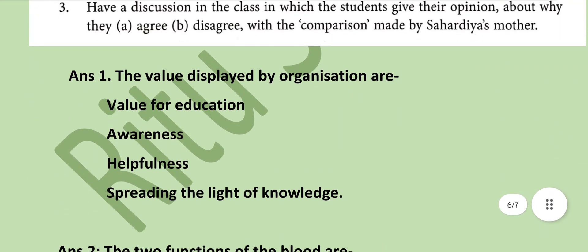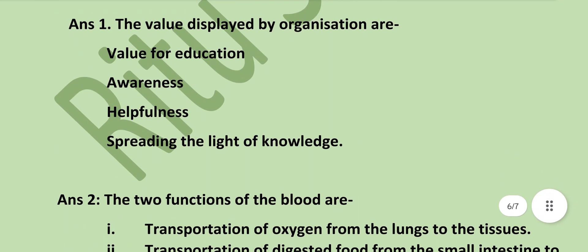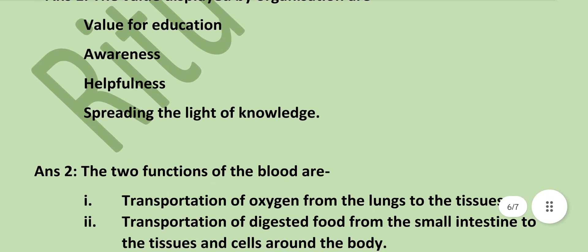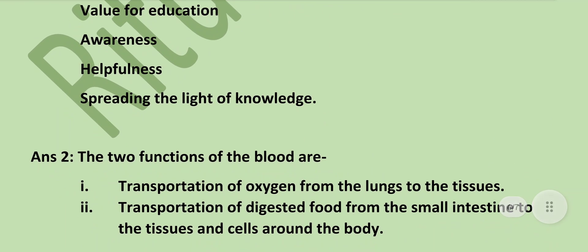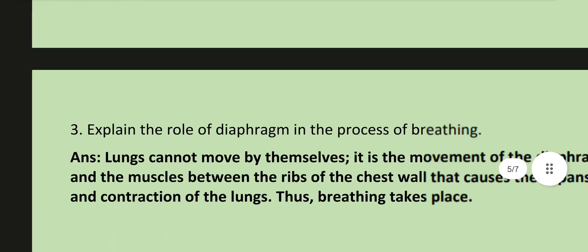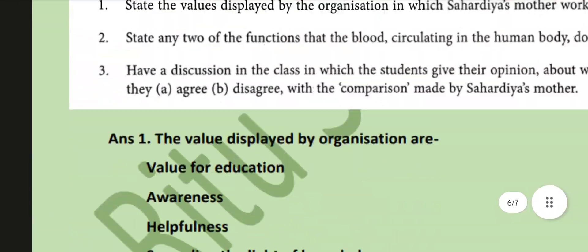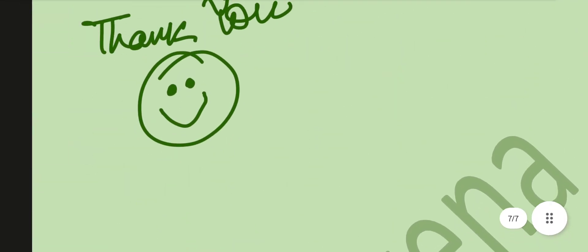Two functions of the blood: transportation of oxygen from the lungs to the tissues, and transportation of digested food from the small intestine to the tissues and cells around the body. That's it — thank you.